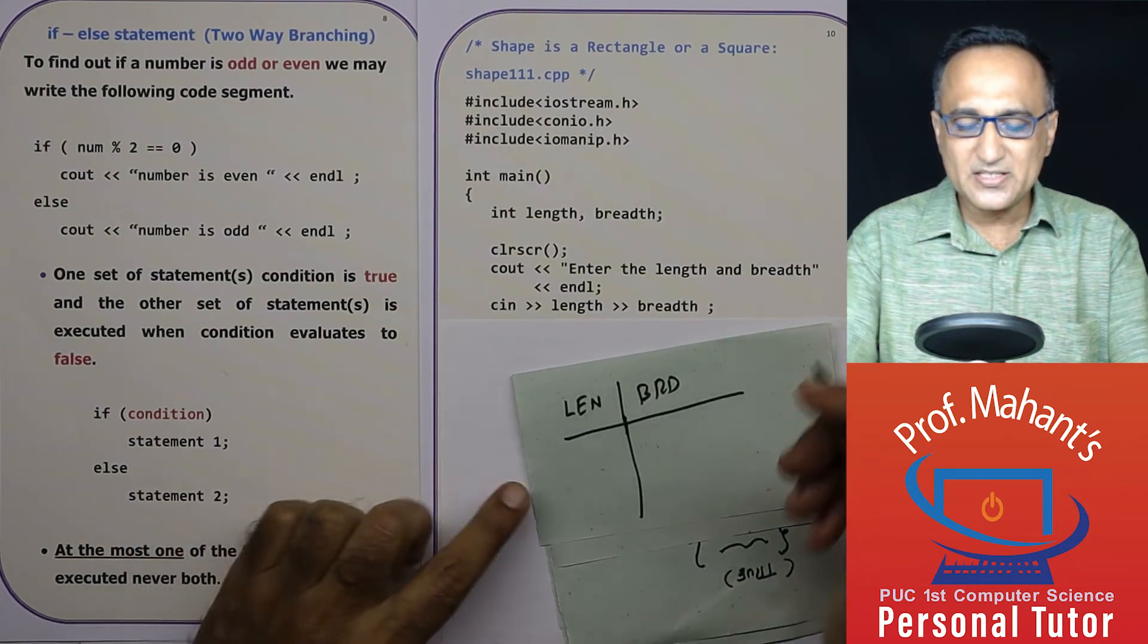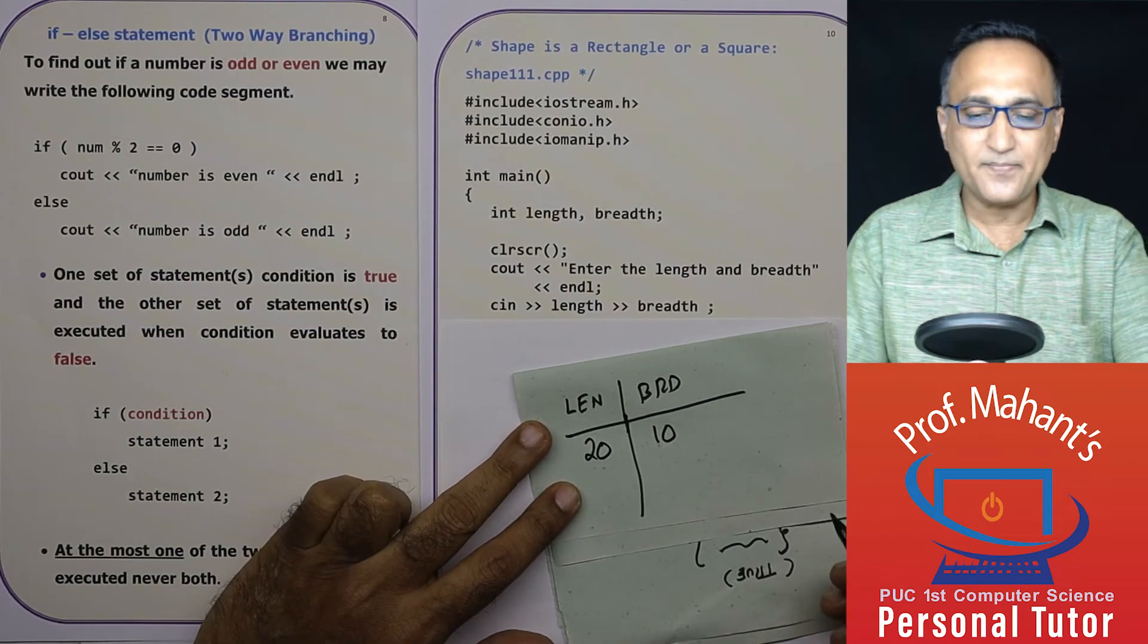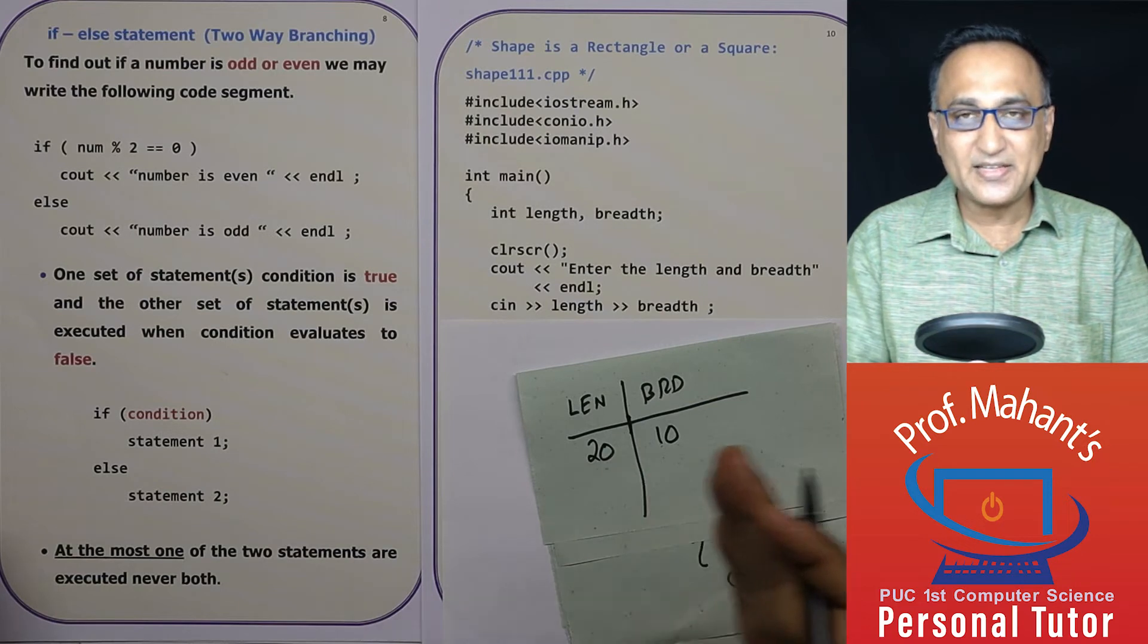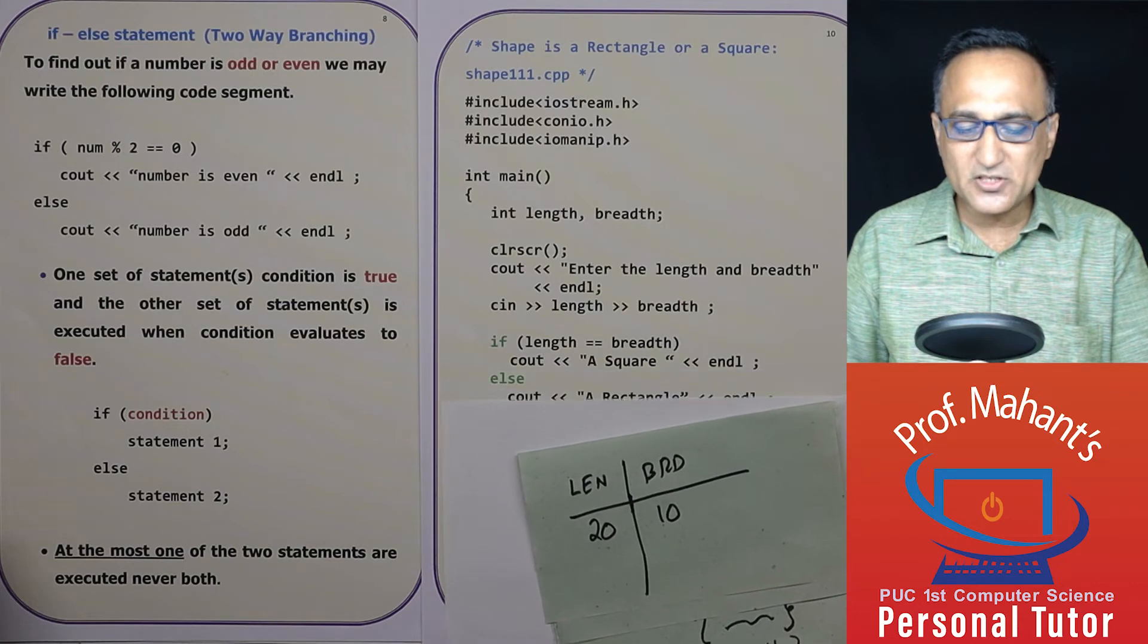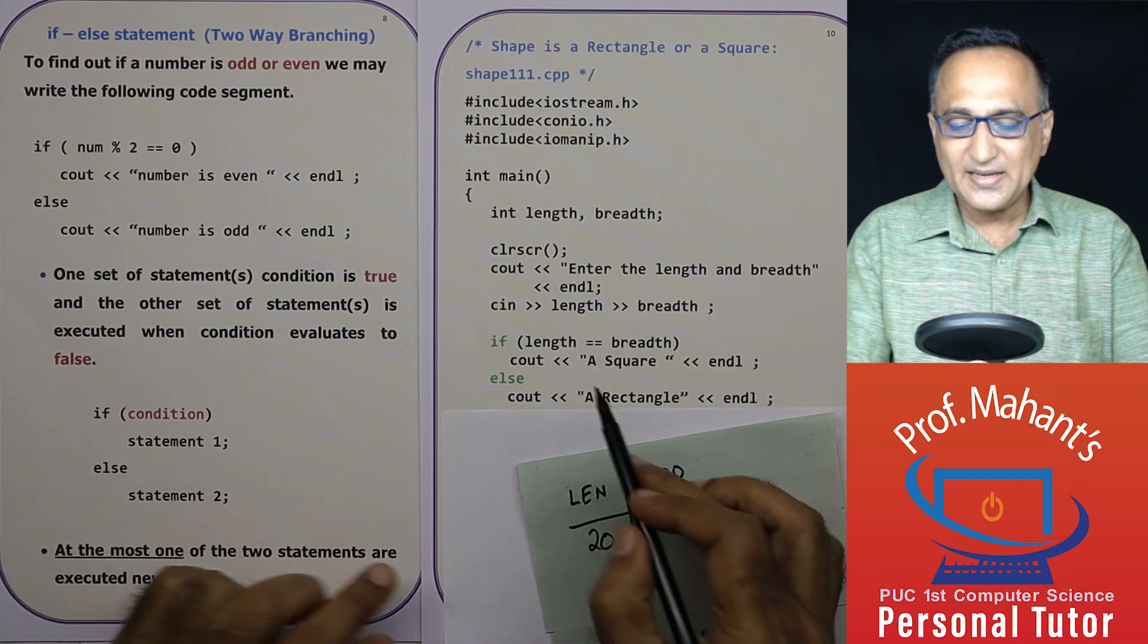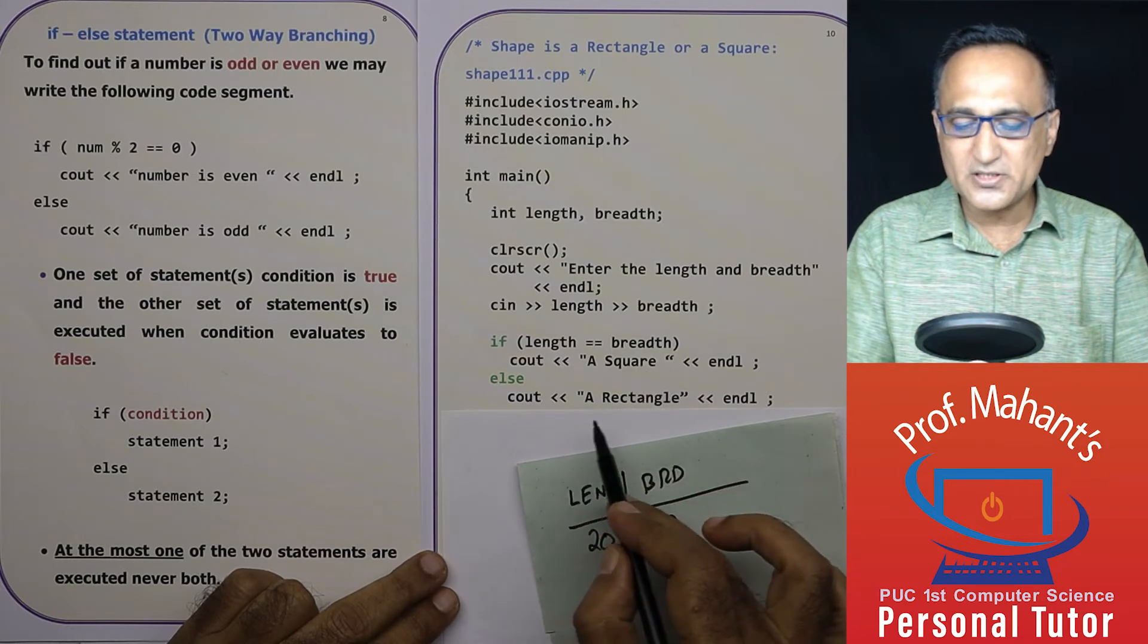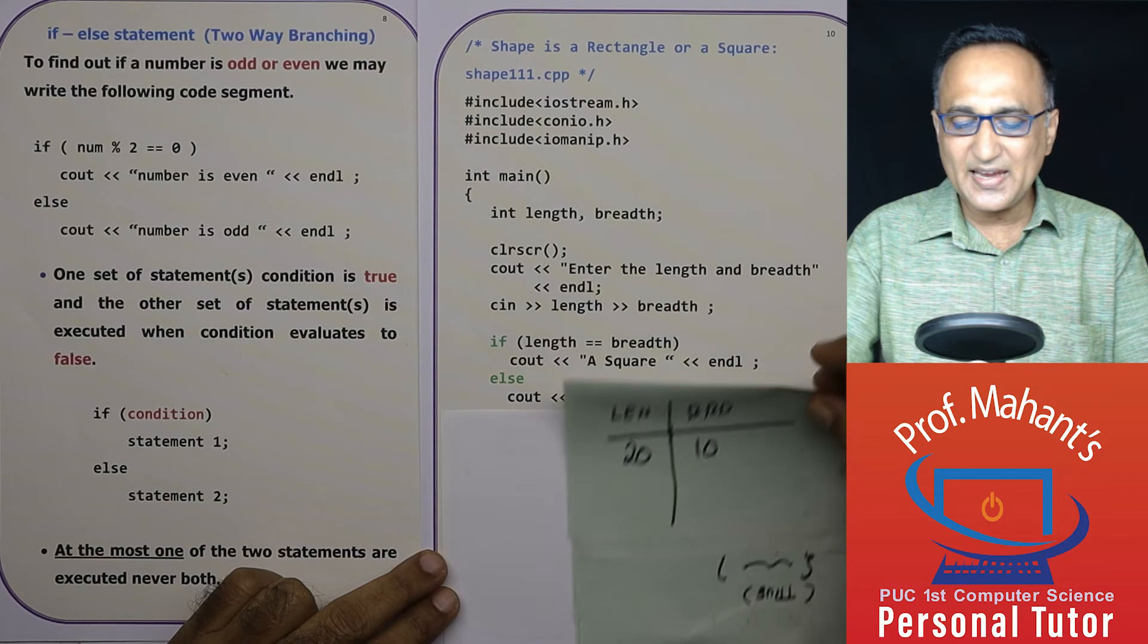So let's say the user enters the value of length as 20 and breadth as 10. This is clearly a rectangle because the length and breadth are different. So in the next step, what I'm doing is an if statement. If length equal to breadth, is 20 equal to 10? It is false. So it will say the input shape is a rectangle.